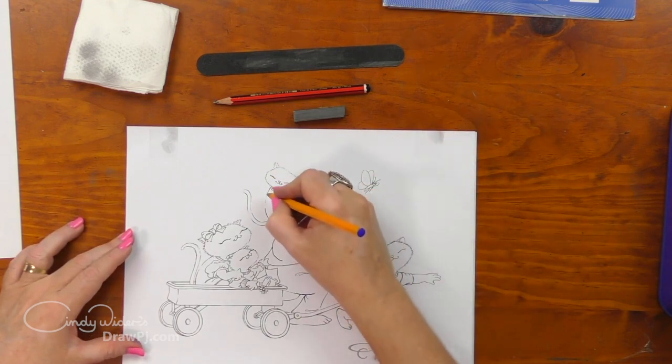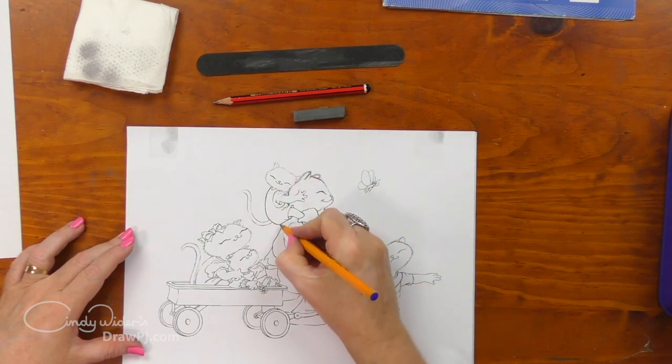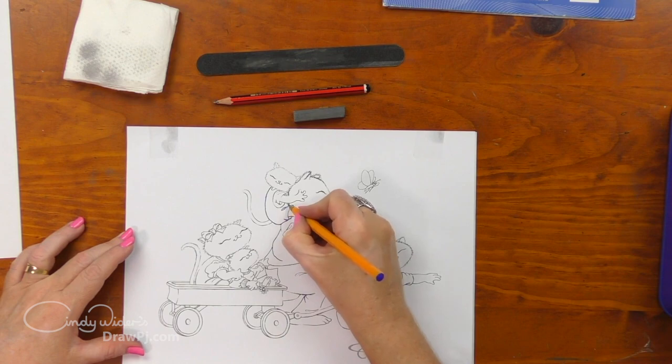Now using your pen you can go around your drawing and start to transfer. A really good tip is to press hard but not too hard. If you press too hard you're going to indent the page underneath and then that looks really unsightly when you go to color in, so just don't press too hard.